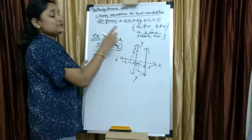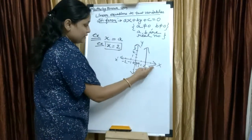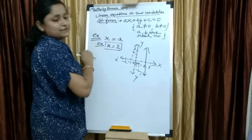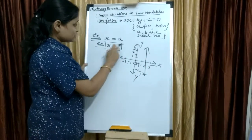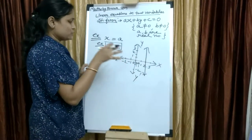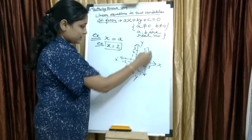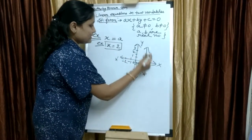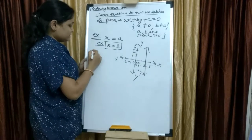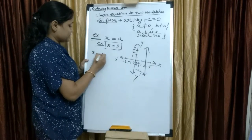And you have to draw a straight line like this. Whenever you have x equals to a graph, that will be parallel to the y axis. Means when x equals to a, x equals to 2, minus 2, minus 3, you have to take the point here and draw a straight line.